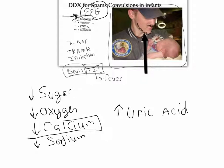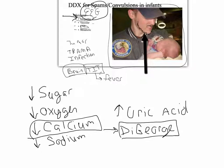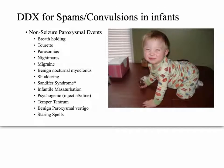In our case, we found a low calcium. This was due to DiGeorge syndrome. We didn't end up having to do an EEG, because by the time we got the electrolyte levels back, we already knew the cause of the spasm convulsion seizures.